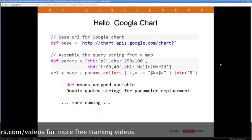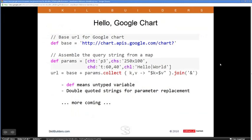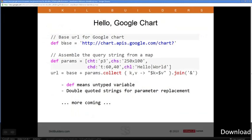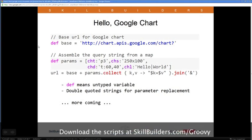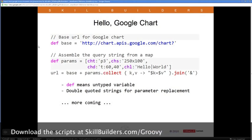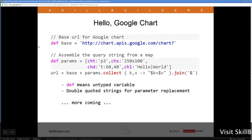Let me do this in Groovy to show how you can access a remote web service and do something with the results. The script starts with the word def, which declares a variable without committing to a type — it could be a string, float, double, or the return value of a method. This is what Groovy calls optional typing.